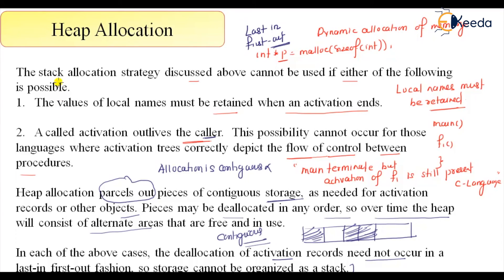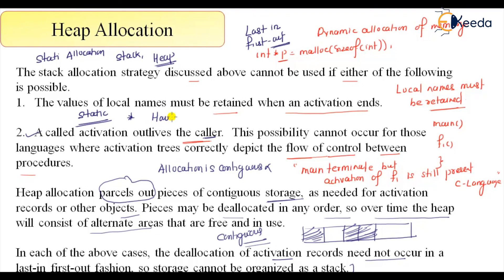We have learned about static allocation and its runtime support, then stack allocation, and finally heap allocation. Heap allocation is used when we can do dynamic allocation — another case is when we need contiguous blocks of storage. One more place where dynamic allocation is used is when we don't know how much space is required at compile time, as it may change at runtime. That's all for allocation strategies — static, stack, and heap allocation.